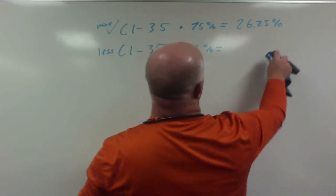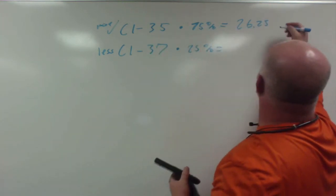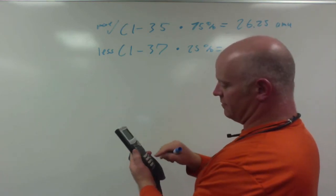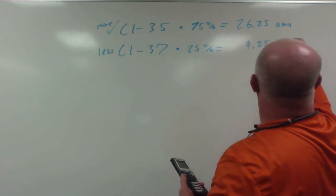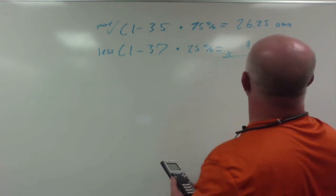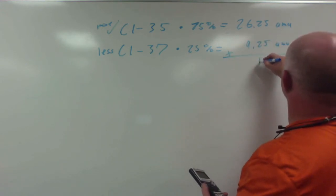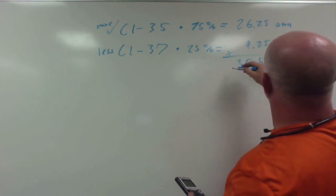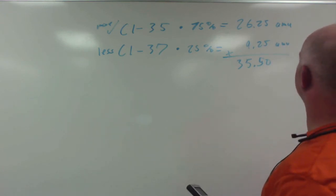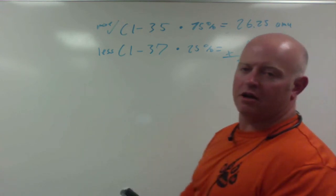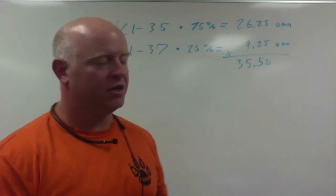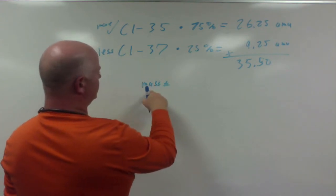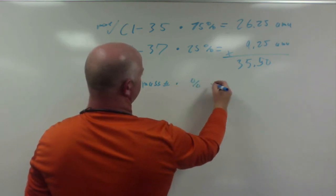This is the percent, I actually took it times 0.75. This is in atomic mass units. I take 37 times 25, times 0.25, I get 9.25 AMUs. Add the two things up, I end up with 35.50. Now it's not exactly 25 percent, it's not exactly 75 percent, but we see the math. You take your mass number of each isotope times its percent.